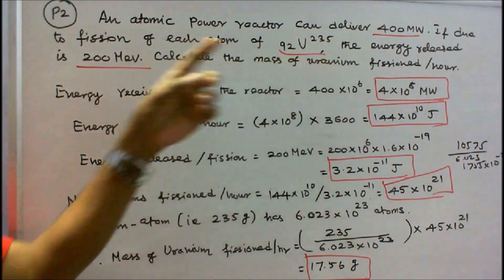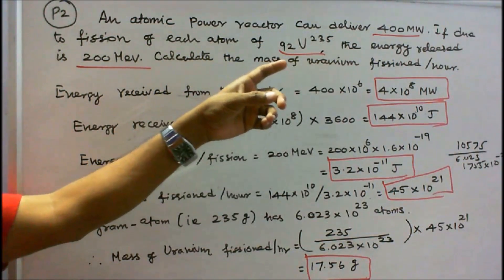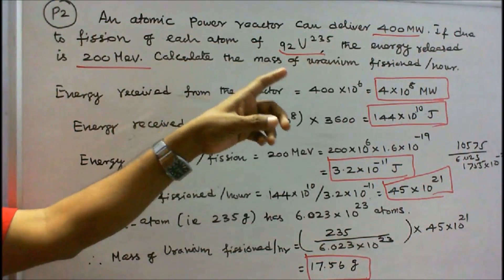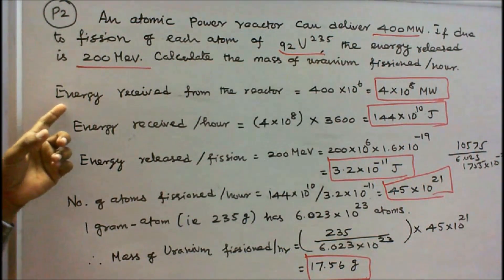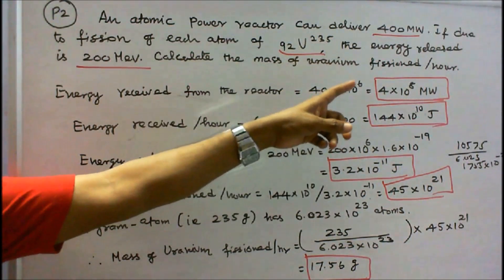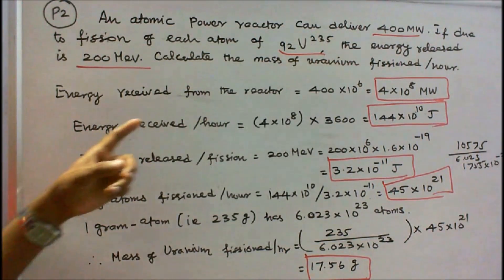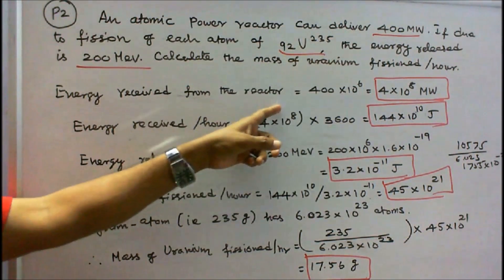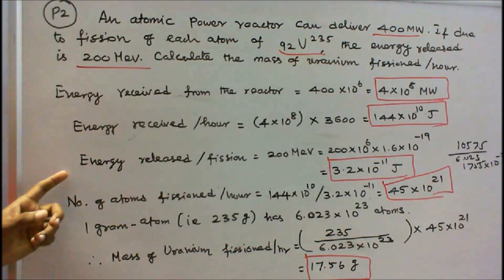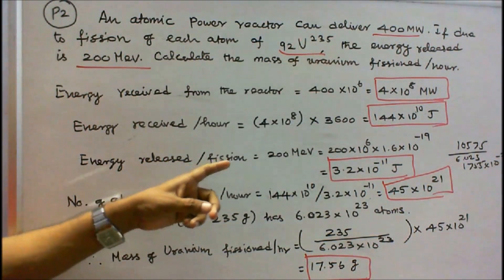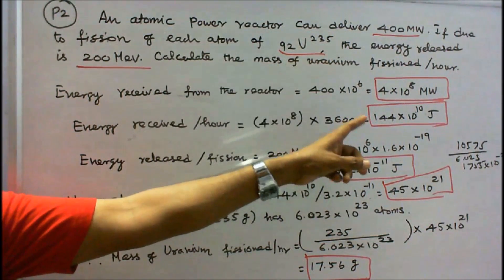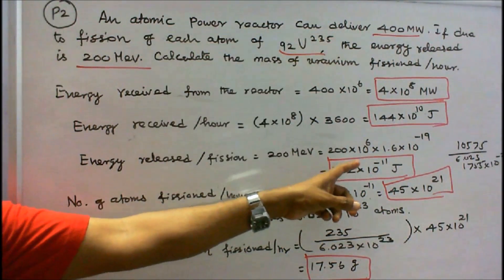Problem number two: if due to fission of each atom of uranium-235 the energy released is 200 million electron volts, calculate the mass of uranium-235 required. First step: energy received from the reactor is 400 megawatts = 4 × 10⁸ watts. Second step: energy received per hour = 4 × 10⁸ × 3600 = 144 × 10¹⁰ joules. Third step: energy released per fission = 200 × 10⁶ × 1.6 × 10⁻¹⁹ = 3.2 × 10⁻¹¹ joules.